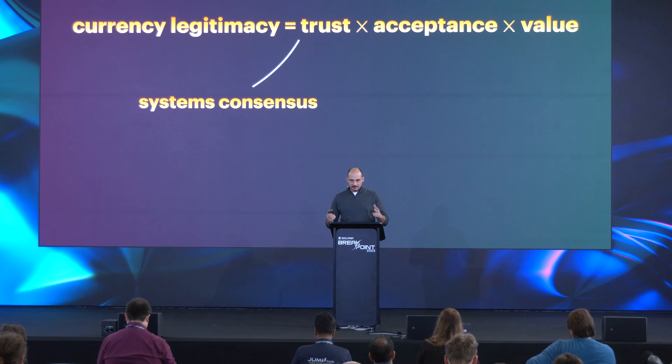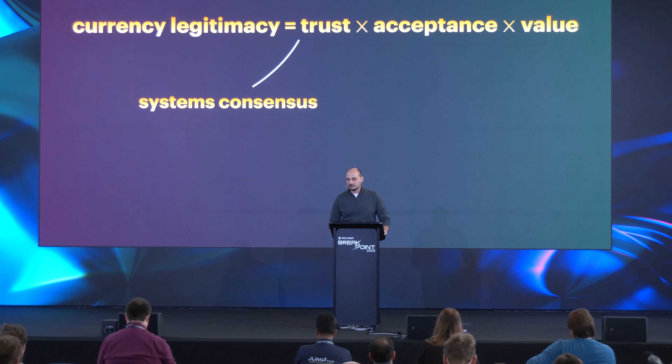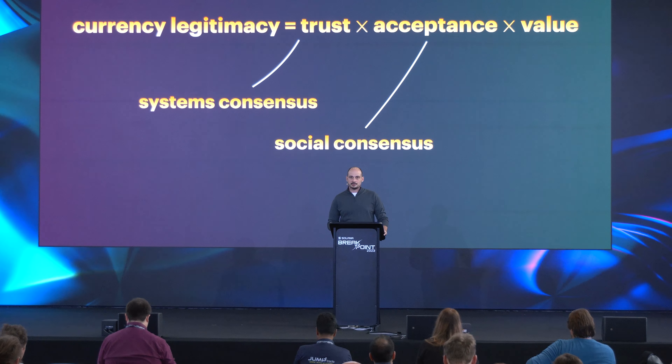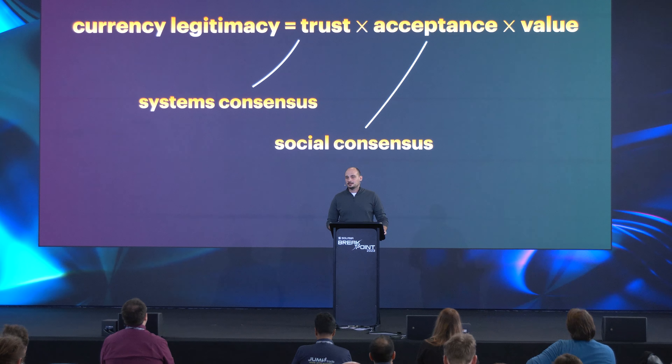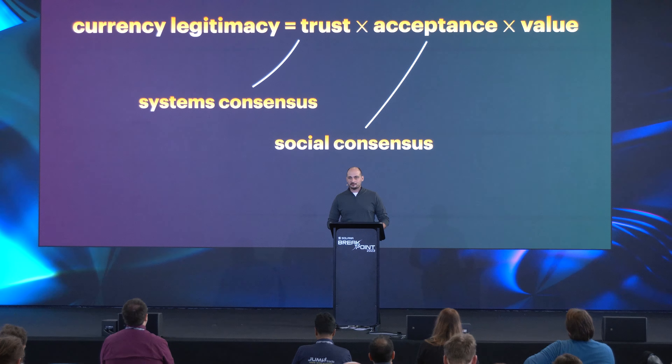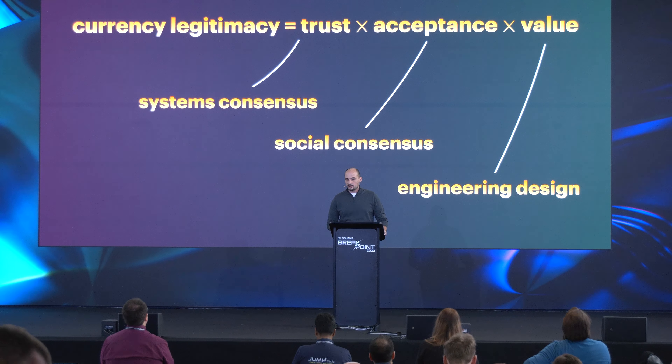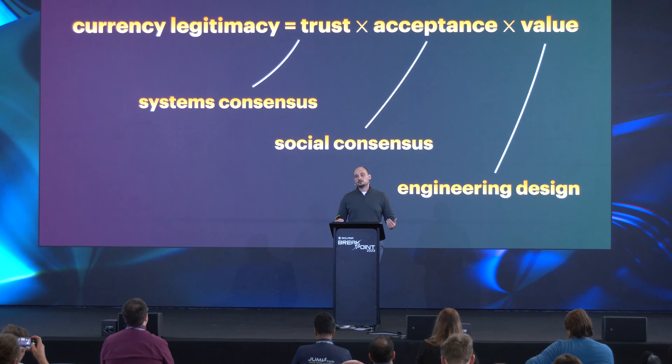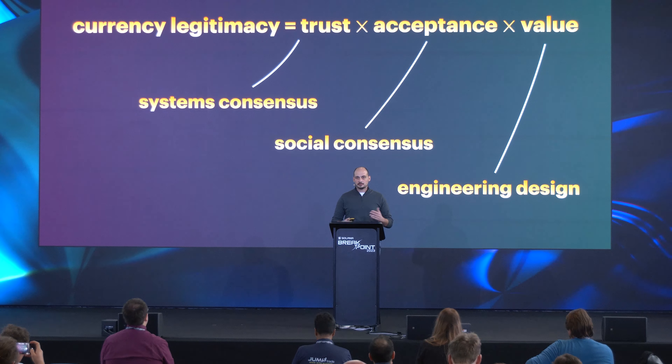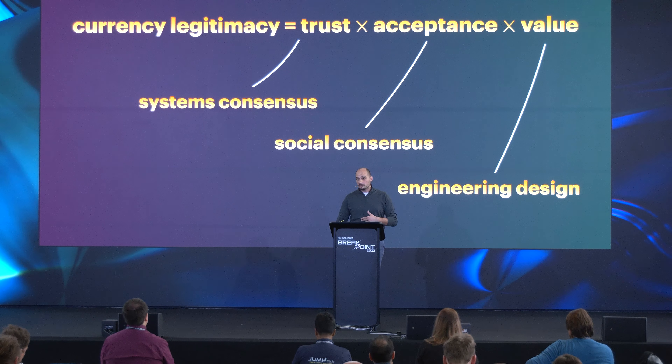Let's begin by contextualizing what gives a currency legitimacy, because it's going to be important in this talk. The way I see it, you've got trust, acceptance, and value — all of those things need to be present. In this case, we assume trust comes through the blockchain, and acceptance is another type of consensus. I'm going to talk about value and how engineering design drives the value of your currency.